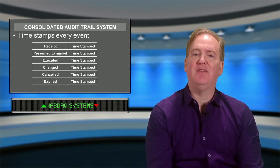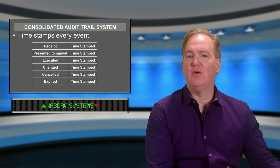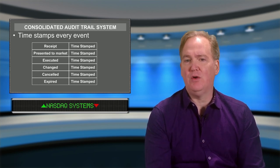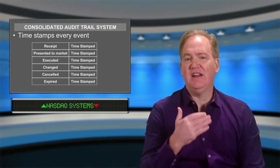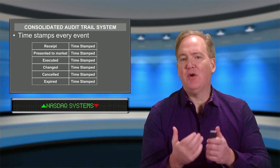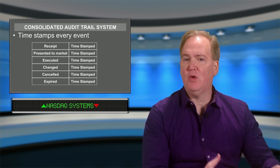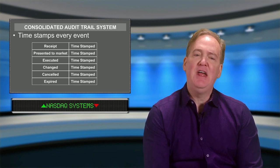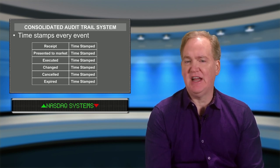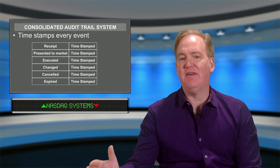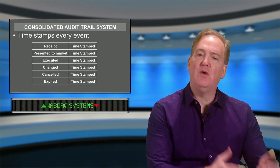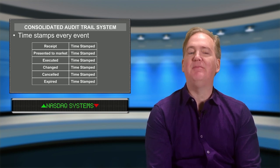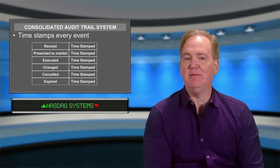The role CATS plays is to ensure that all orders are presented to the marketplace in a timely manner, and that broker-dealers do not hold back customer orders and use them to trade against them later in the day. CATS effectively timestamps every order event in the life of the order. When the order is received, it is timestamped. When it's presented to the marketplace, it is timestamped again. If the order is executed, it is timestamped.